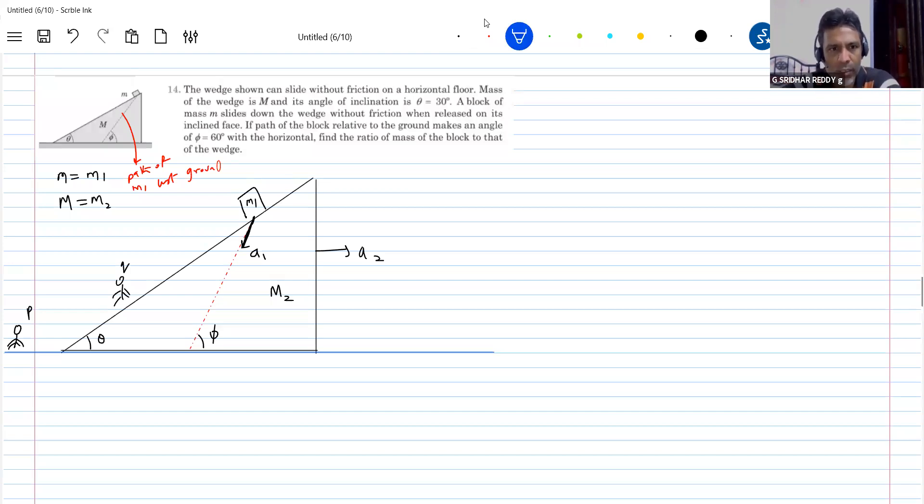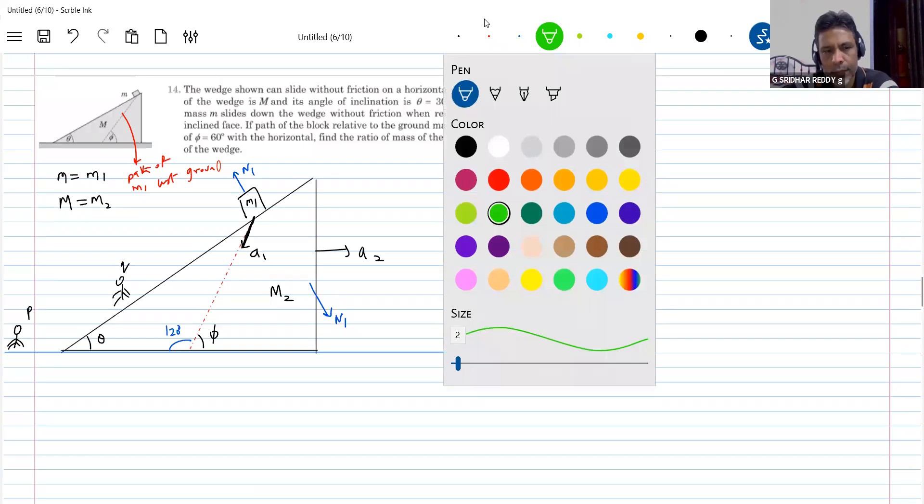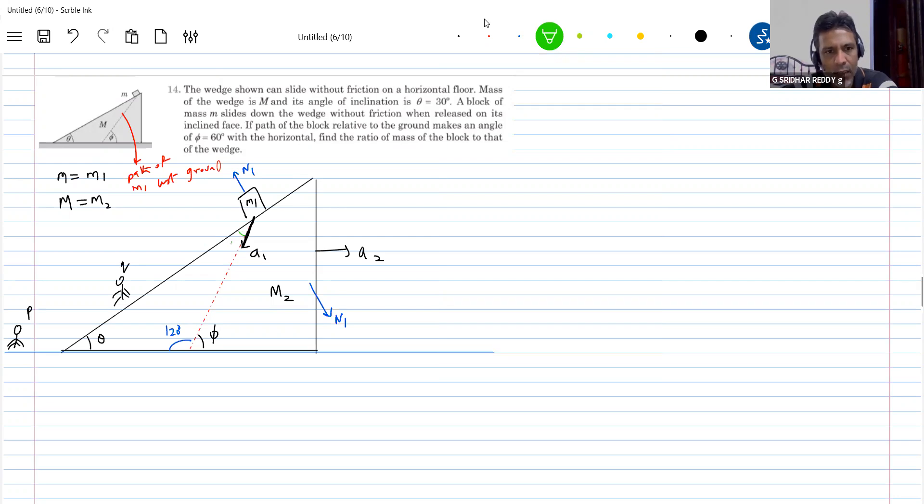So we'll go for the forces. And one normal contact, they'll be N1. What makes the wedge to move along X axis? The normal reaction only. This is theta, this is 60. So what can be this angle? 120. So what's this angle? I'll call alpha. 30 degrees. This is 30 degrees. How do we know?